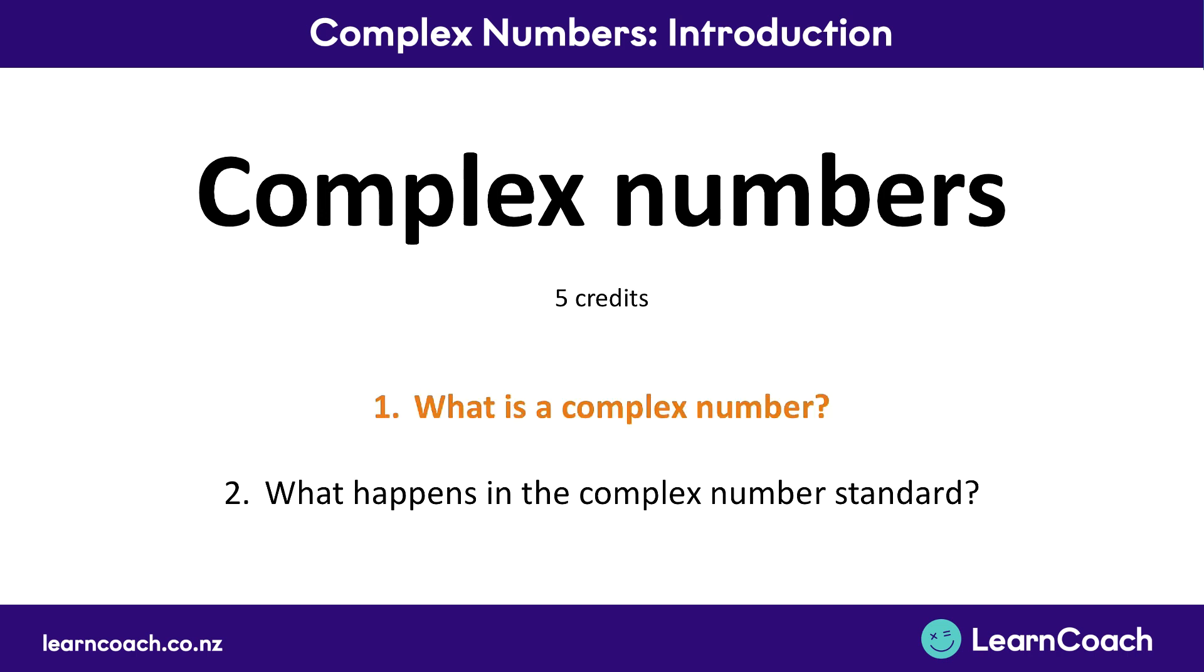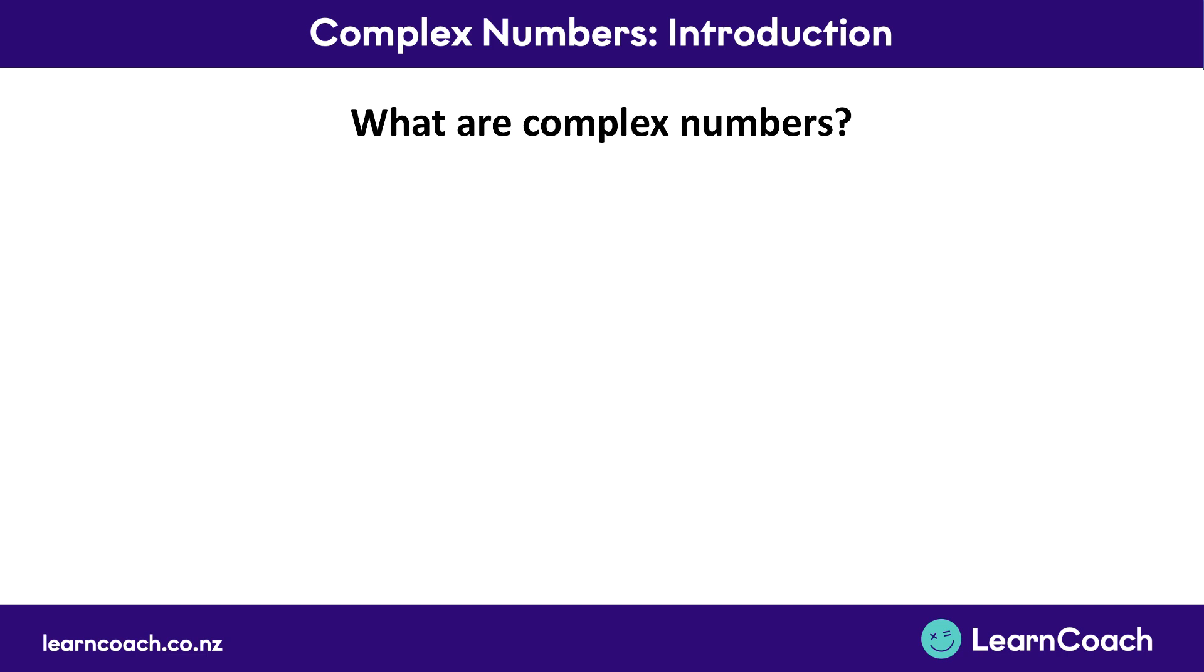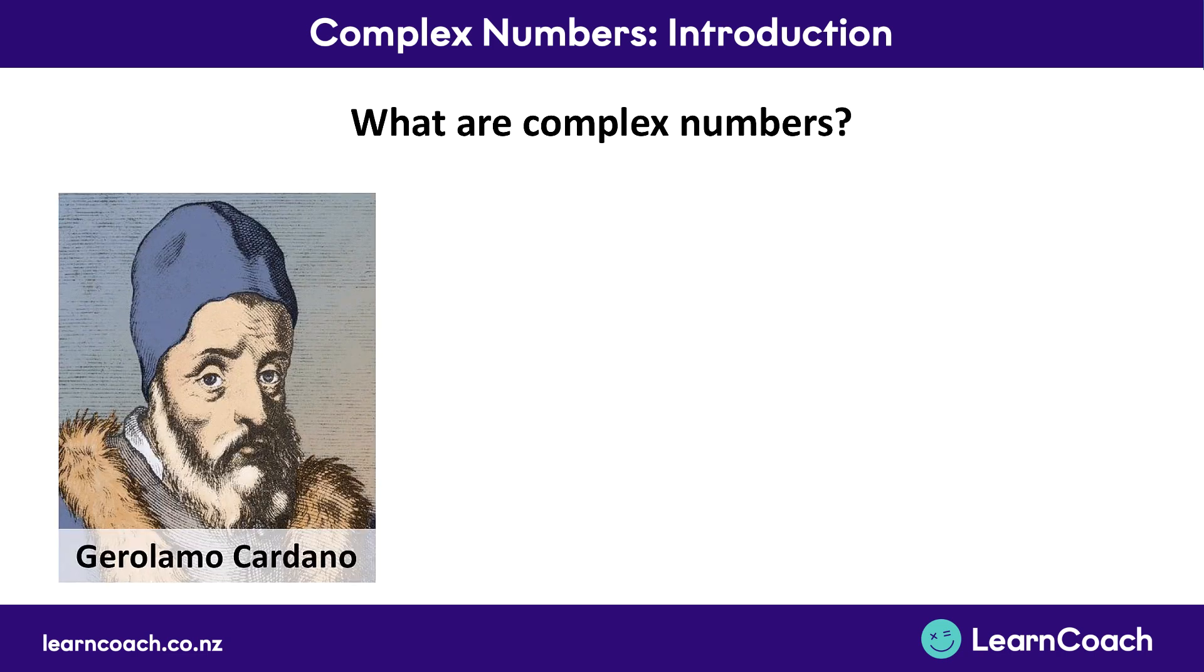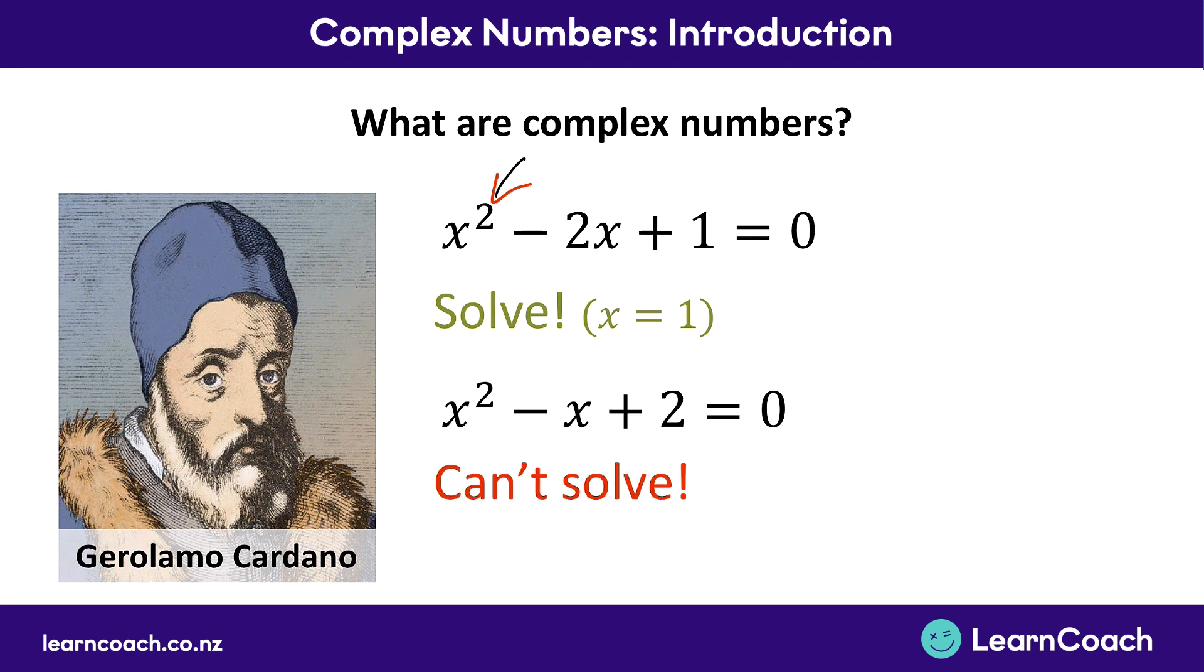Now to understand what a complex number actually is, it goes back around 500 years to this guy, Girolamo Cardano. He figured out that while you can solve some polynomial equations—that's equations that have x to the power of something in them—there are other polynomial equations that you just can't solve. The reason you can't solve this equation here, for example, is because you end up having to solve for the square root of negative 1.75, and we are not allowed mathematically to have the square root of a negative number.